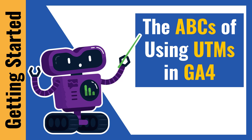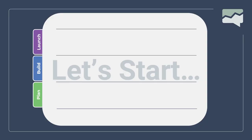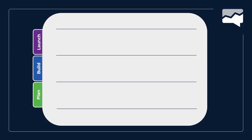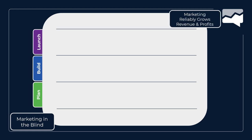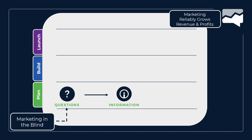Getting started: the ABCs of using UTMs in GA4. We're going to dive right in with the framework — plan, build, launch. The measurement framework is important; you must have one in your organization. It is three simple steps: plan, build, and launch. We want to move from marketing in the blind — lots of guesswork and drama — to a point where measurement produces revenue and profits. Planning is asking results and how questions, then gathering the information needed to answer those questions. Your UTMs are how you gather information to answer questions specifically around traffic and where it's coming from.